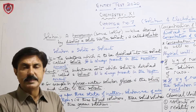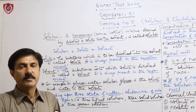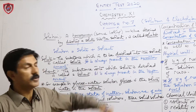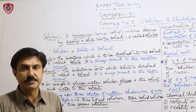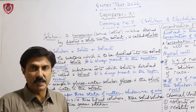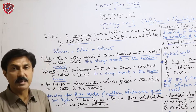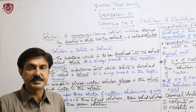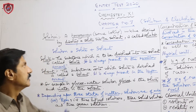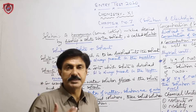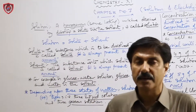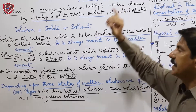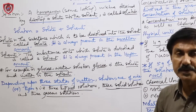Assalamu alaikum warahmatullahi wabarakatuh, my dear students. We are here for Chapter Number 7: Solutions and Electrolytes from your first year chemistry syllabus. This is also a very important chapter. A solution is the homogeneous mixture which is obtained by dissolving a solute into the solvent.